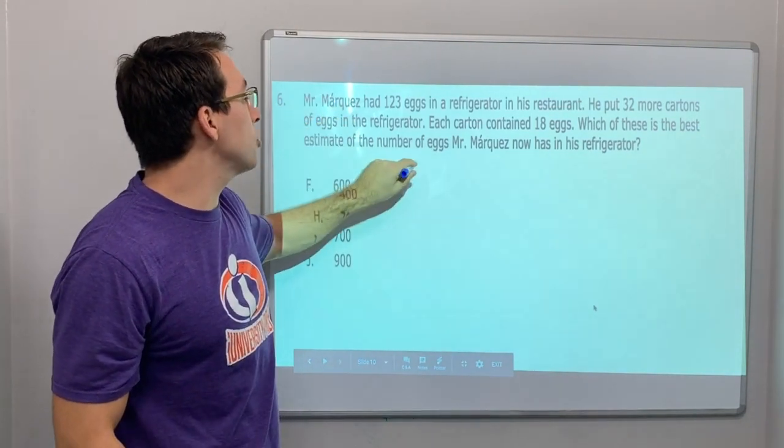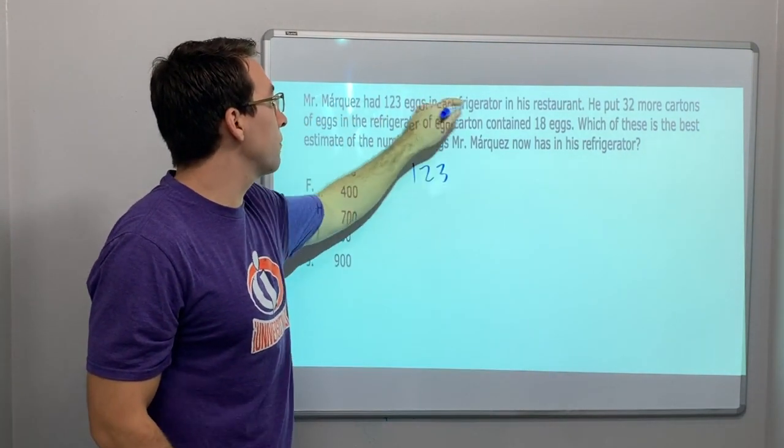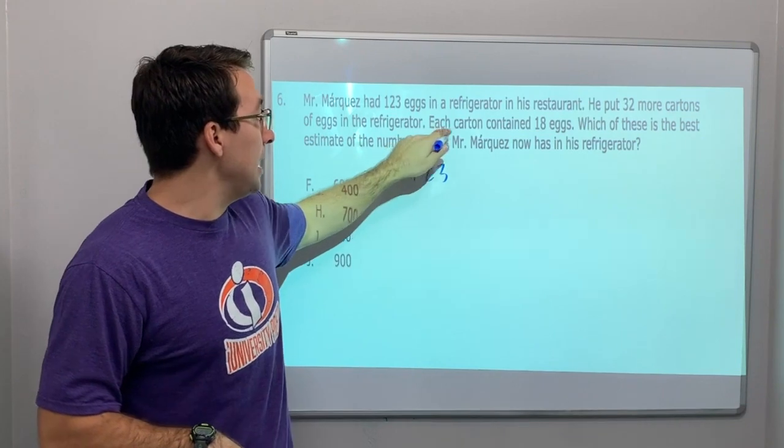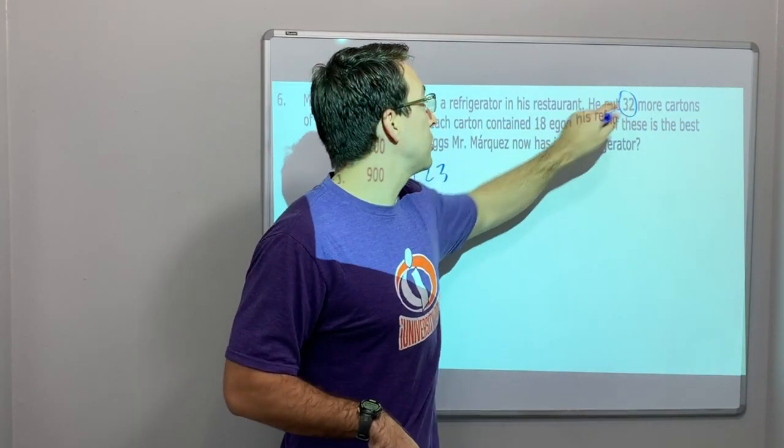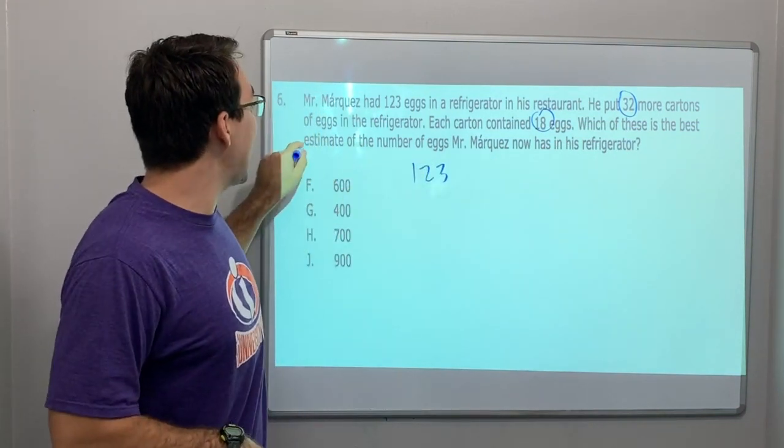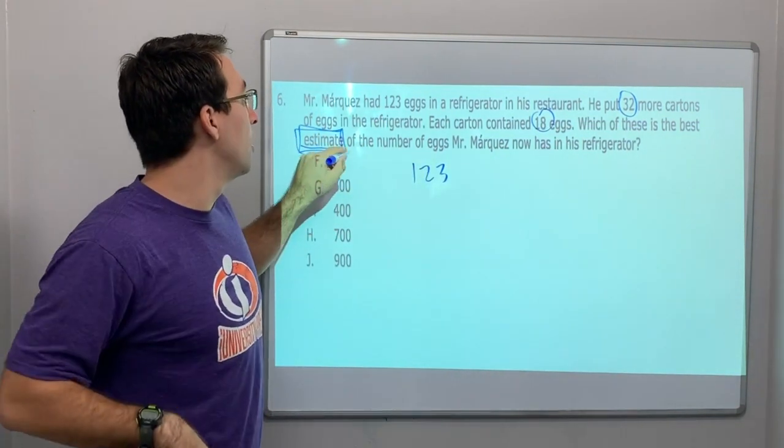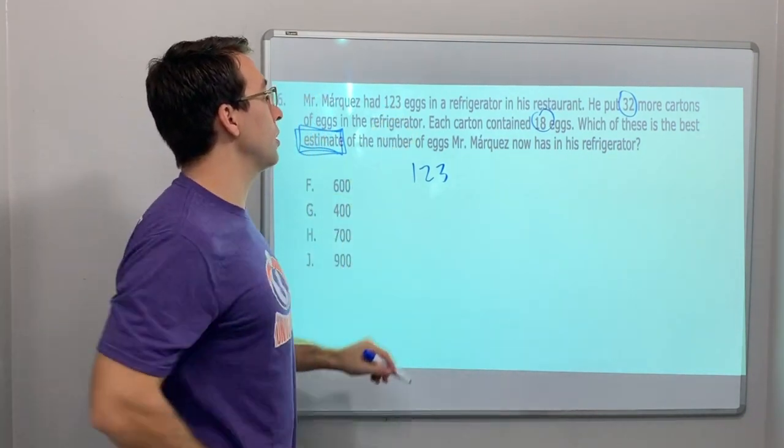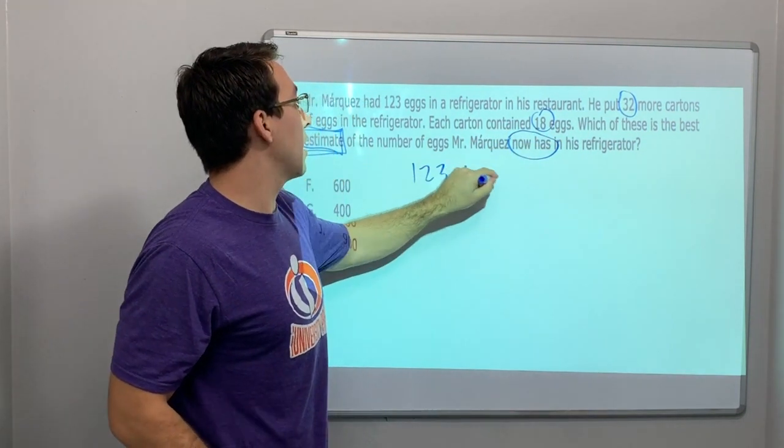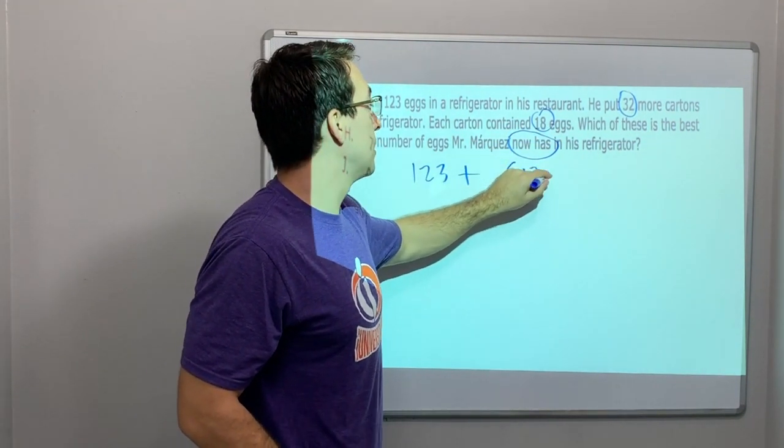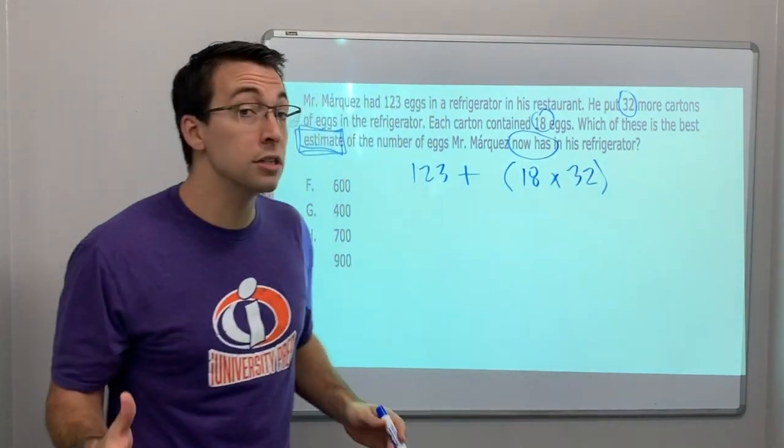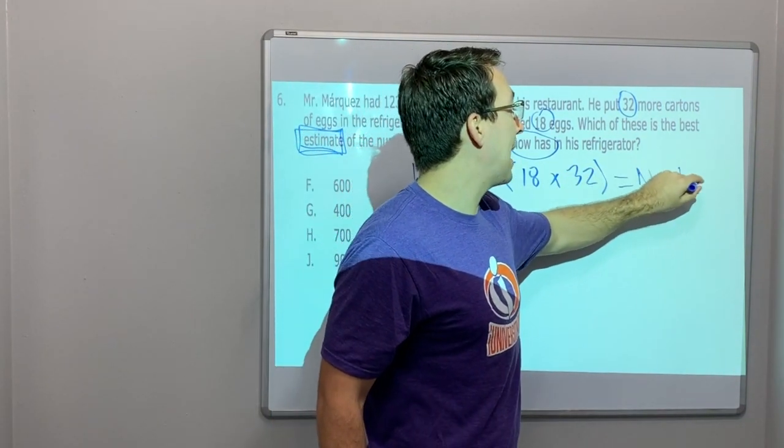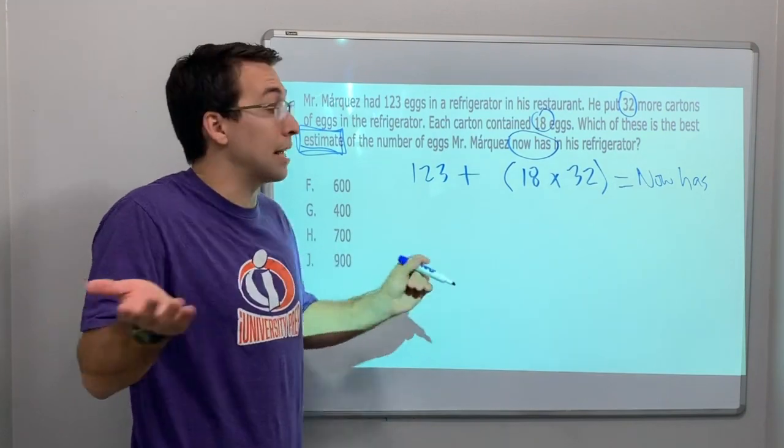Mr. Marcus had 123 eggs in a refrigerator in his restaurant. He put 32 more cartons of eggs in the refrigerator. Each carton contained 18 eggs. 32 and 18. Which of these is the best estimate? We're going to round. You have to round the number of eggs Mr. Marquez now has in his refrigerator. 123 plus 18 times 32. 32 cartons. Each carton has 18 eggs, right? So this equals now has.